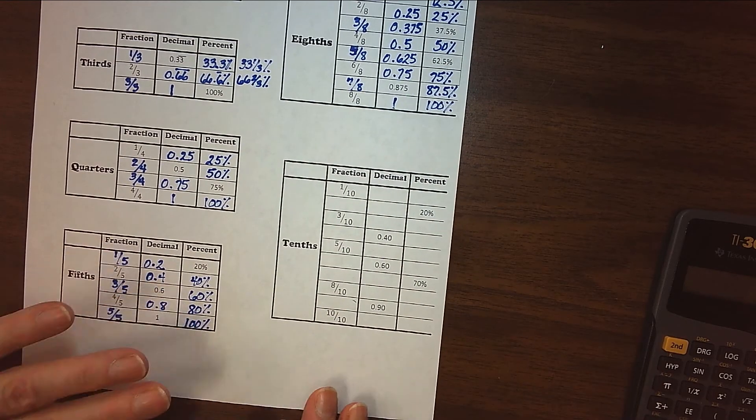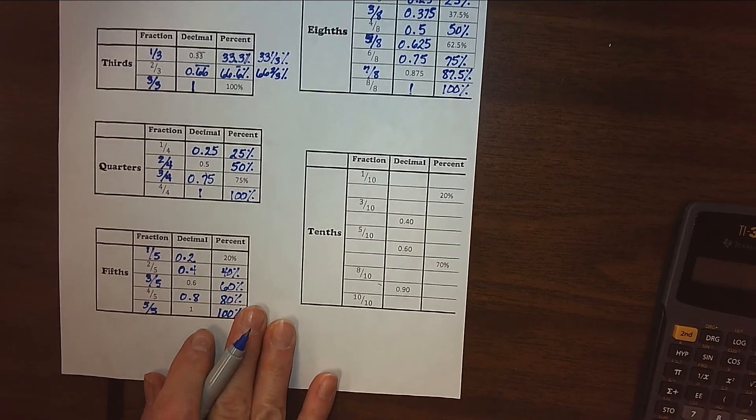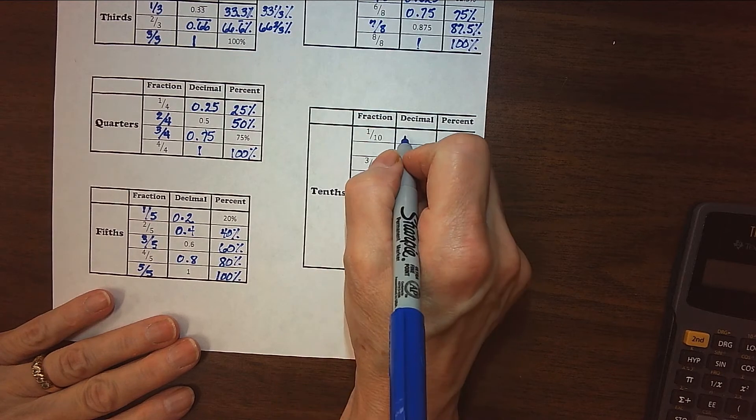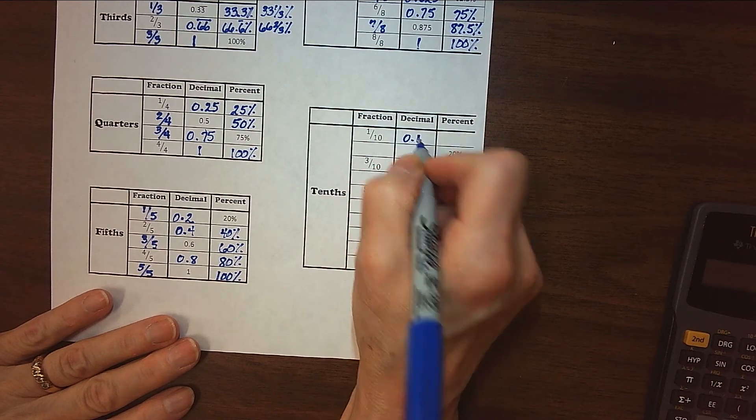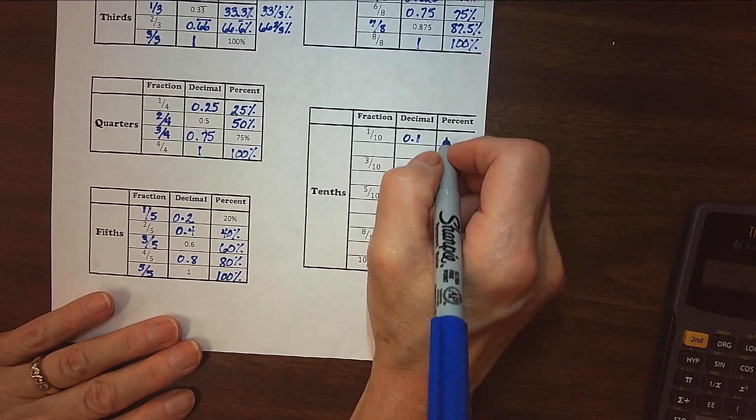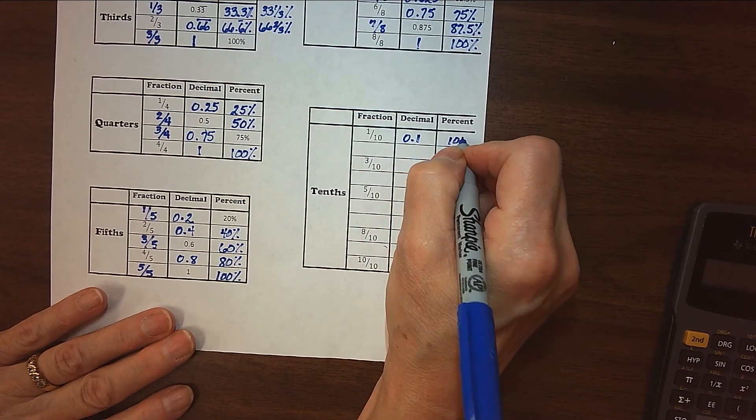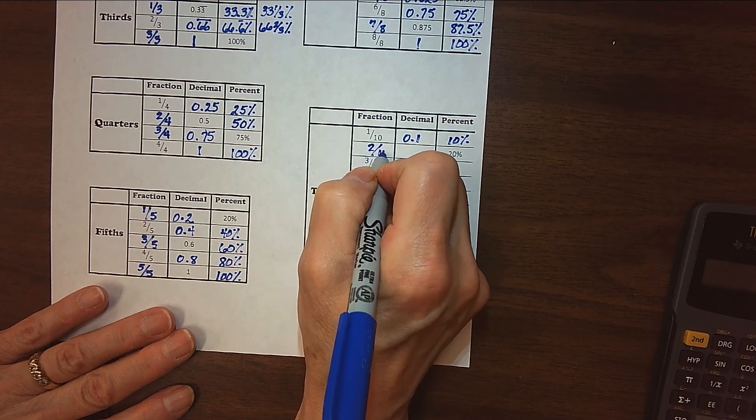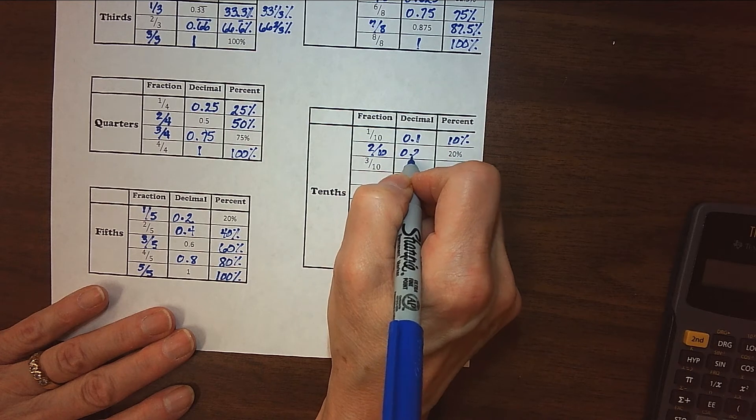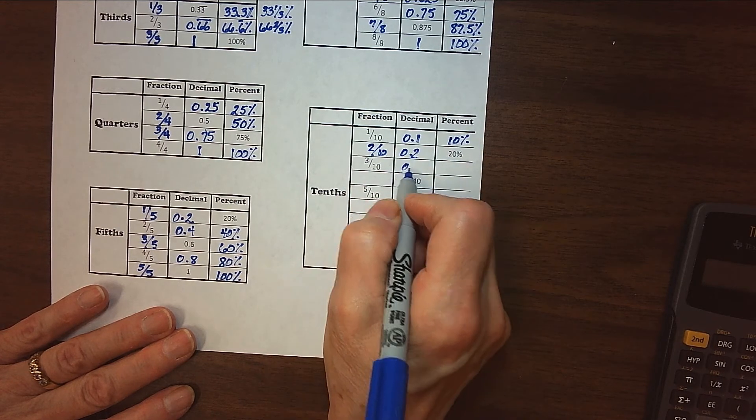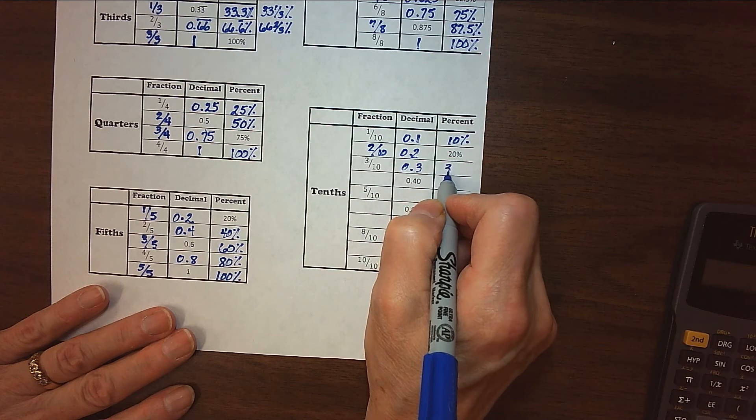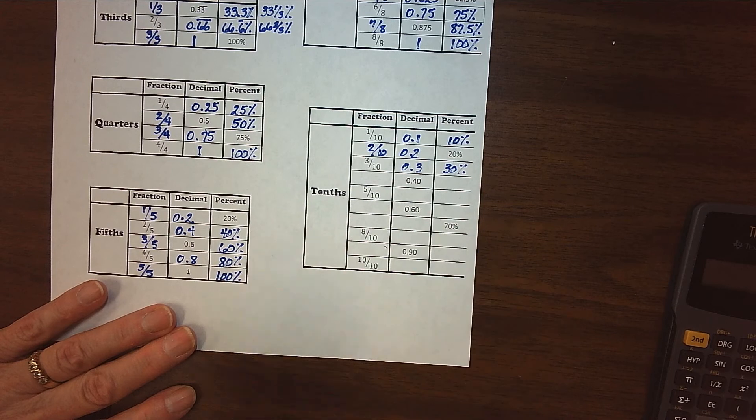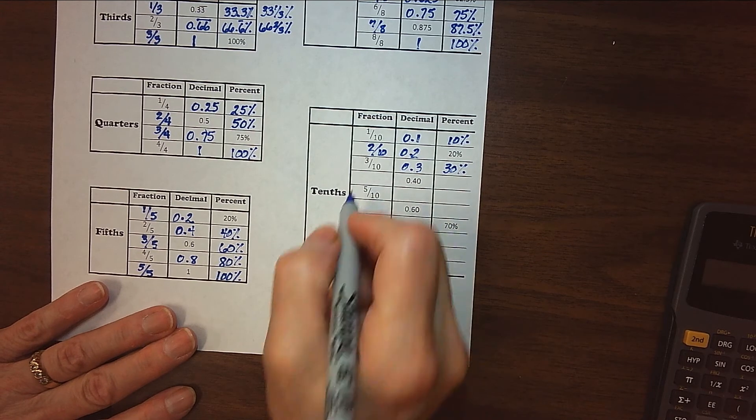All right. Now our tenths. Tenths should be fairly easy for us because, again, we can think money with this. So one-tenth looks like 0.1 or like we would write 10 cents if we had another zero there, right? And that's 10%. One-tenth, 10%, right? Two-tenths, 0.2, and 20%. Three-tenths, 0.3, and 30%. So these are fairly easy, right, because the numerator tells us what the decimal and the percent have to be.